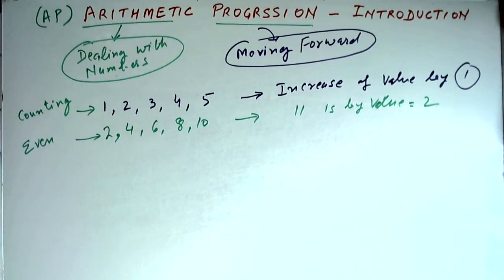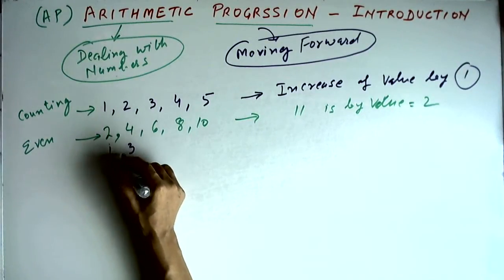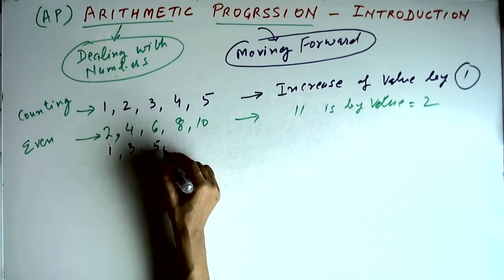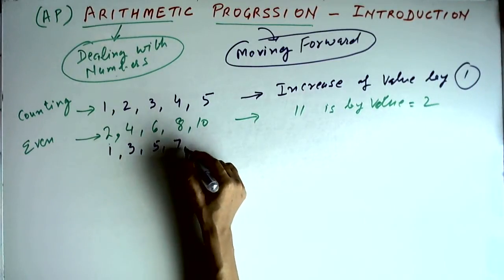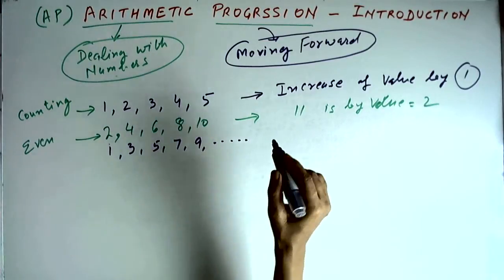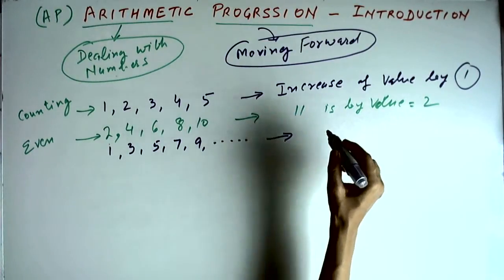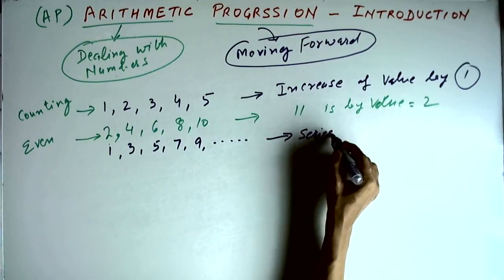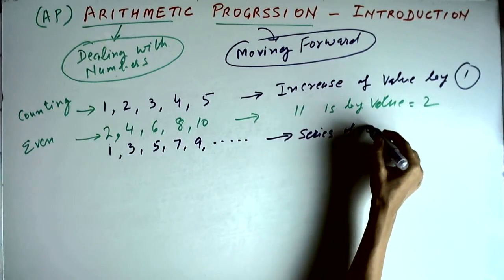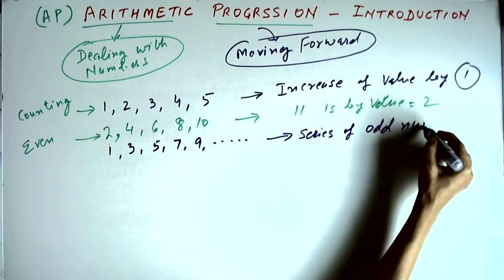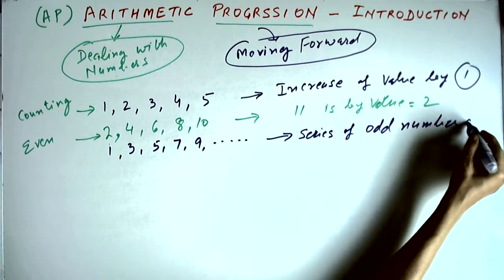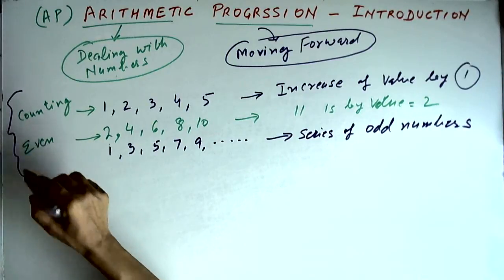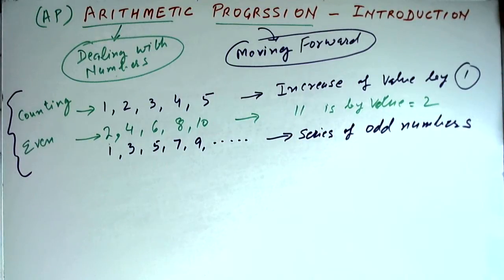Similarly, we will have a series of odd numbers like 1, 3, 5, 7, 9 and so on. So these are three simple examples of arithmetic progression: simple counting, even numbers, and odd numbers.